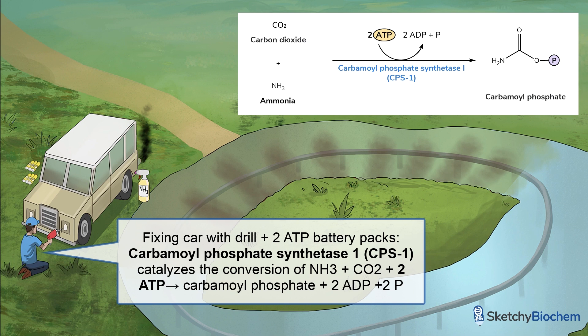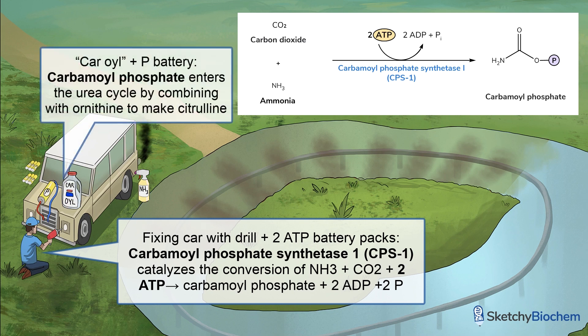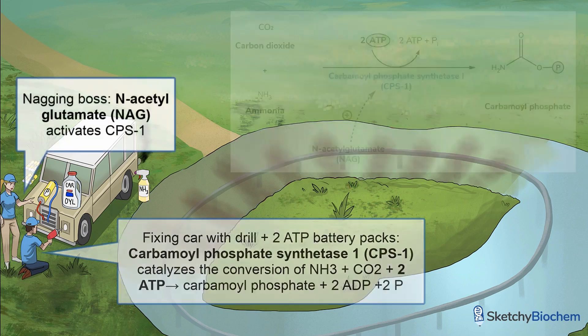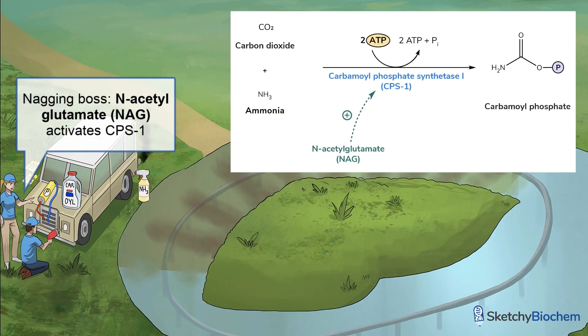Synthetase enzymes usually require energy, and this particular step requires 2 ATP. Don't confuse CPS-1 with CPS-2, which occurs in the cytosol and is the rate-limiting enzyme in pyrimidine synthesis. That bottle of car oil and P-battery on the Jeep is carbamoyl phosphate. Our park worker's nagging boss is telling him to work faster — that's N-acetylglutamate, or NAG, which activates CPS-1.